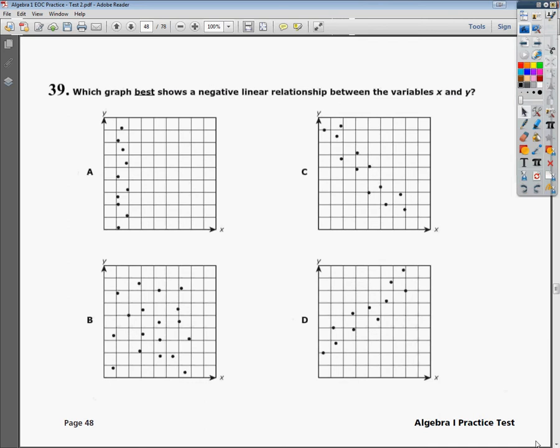Welcome, this is Algebra 1 Practice Test 2, question number 39. The question says, which graph best shows a negative-linear relationship? Two important words there: negative and linear.